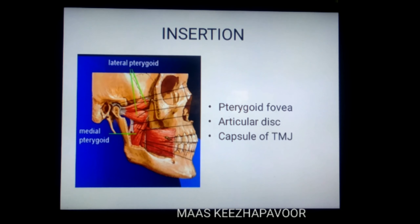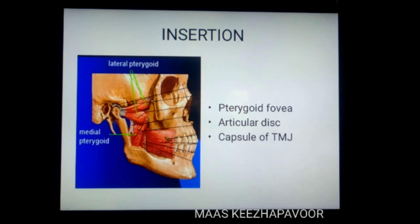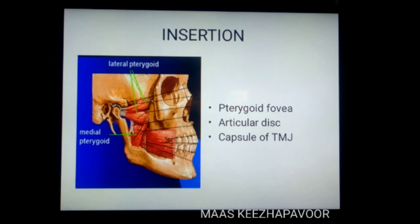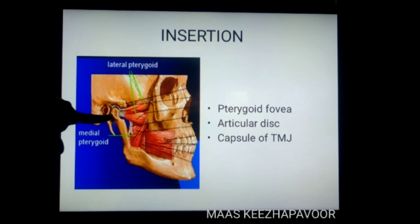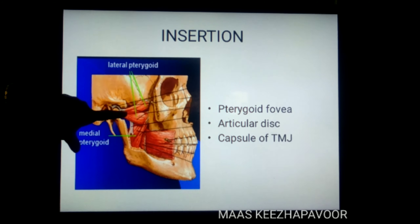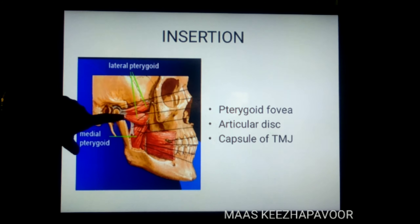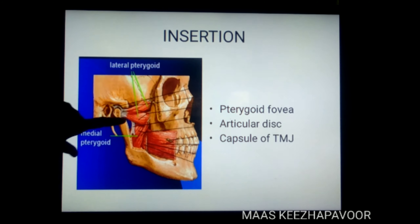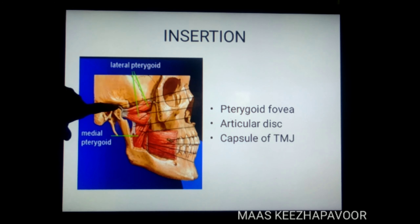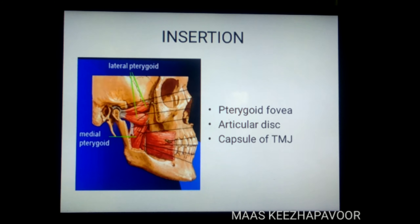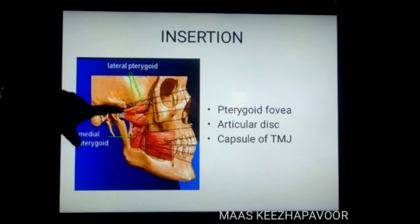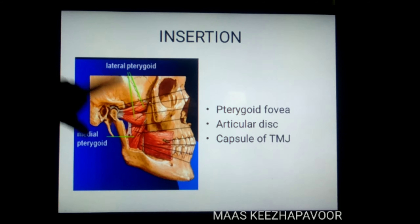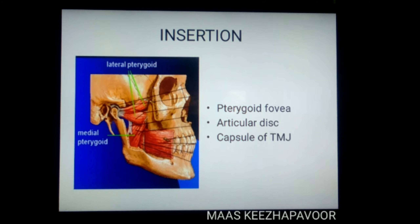The lateral pterygoid muscle is getting inserted to the pterygoid fovea in the condyle of mandible, and also to the articular disc of the temporomandibular joint, and to the capsule of the temporomandibular joint.